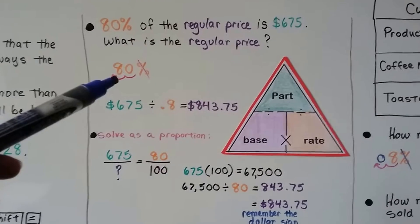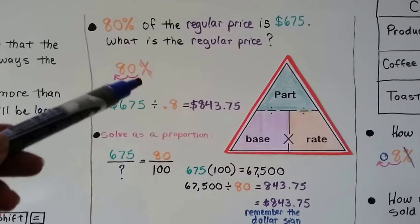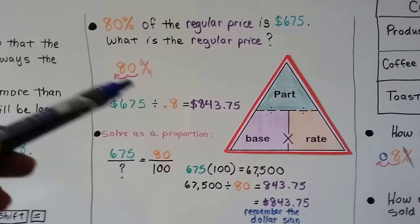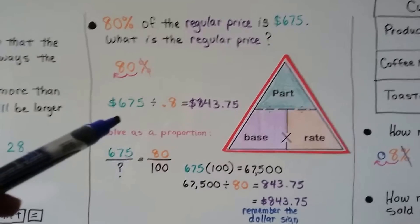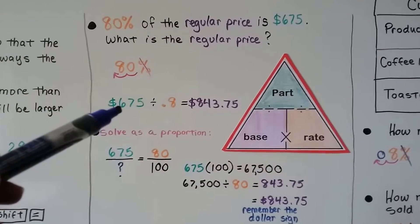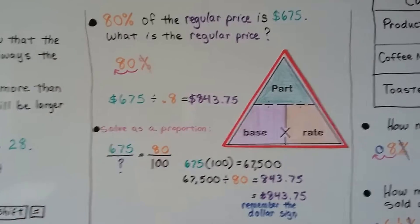We turn this into a decimal. And that zero is not really needed on the back side of this 8, is it? If we move the decimal up here, we just have a .8. So that'll make it easier for us. And then we do the part divided by the rate, 675 divided by .8. We get $843.75.